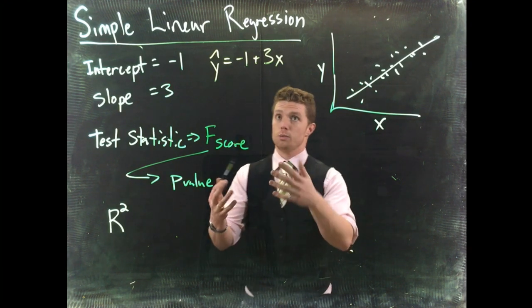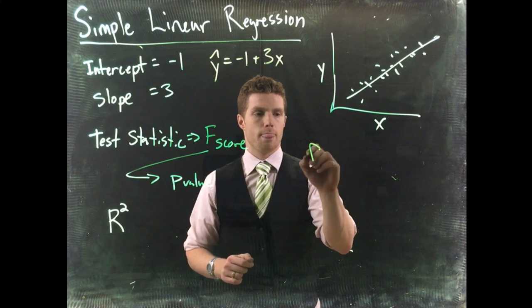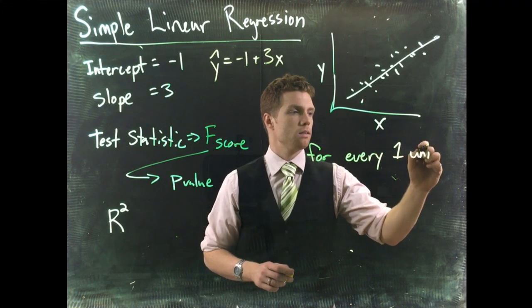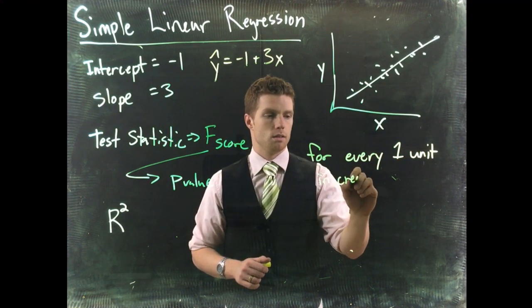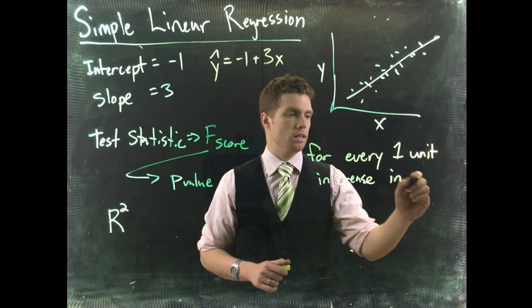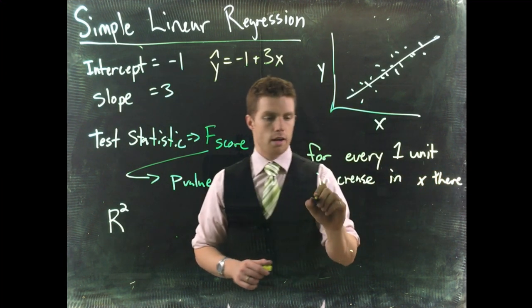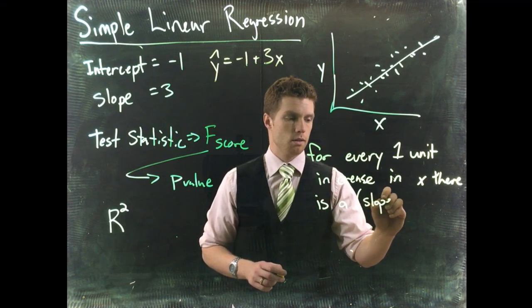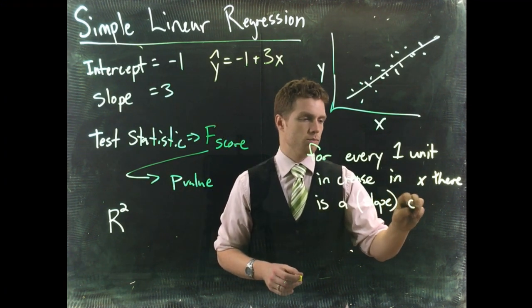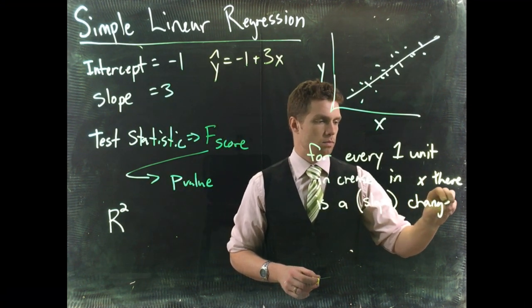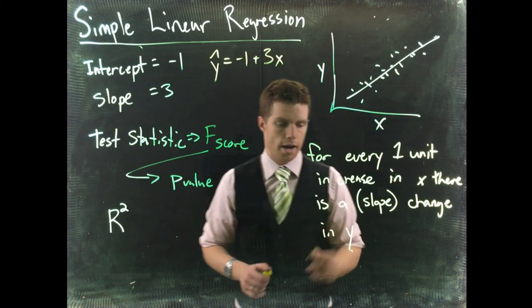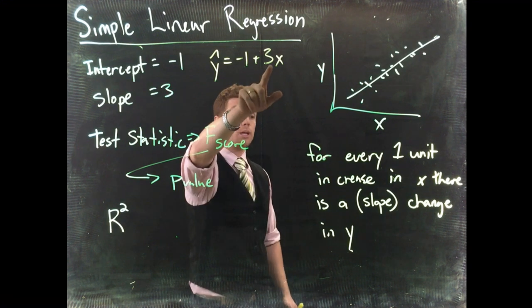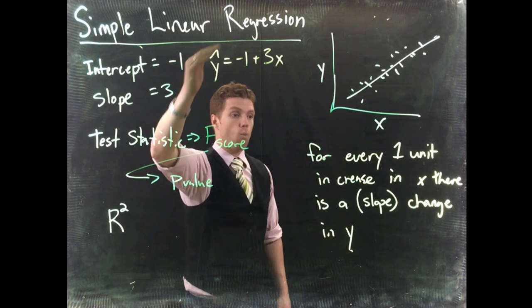So we could say that for every one unit increase in x, there is a, this is going to be the slope change in y. Okay, so for every one unit increase in x, in this scenario, we would have a three unit increase in our y variable.